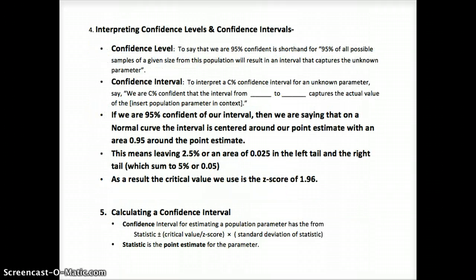When we say we're 95% confident, we're saying 95% of all samples of a given size will result in an interval that captures the unknown parameter. So just looking at our confidence level, it's the amount of values under the normal curve that cover the true value.